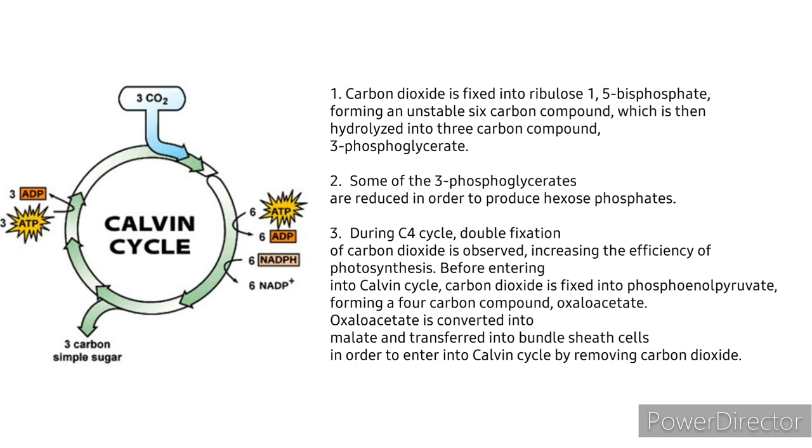The remaining 3-phosphoglycerates are used in the recycling of ribulose 1,5-bisphosphate. During the C4 cycle, double fixation of carbon dioxide is observed, increasing the efficiency of photosynthesis. Before entering into Calvin cycle, carbon dioxide is fixed into phosphoenolpyruvate, forming a four-carbon compound, oxaloacetate. Oxaloacetate is converted into malate and transferred into bundle sheath cells in order to enter into Calvin cycle by removing carbon dioxide.